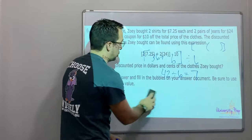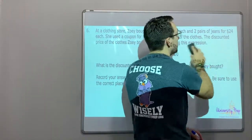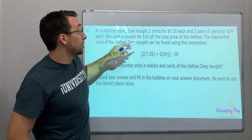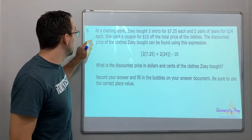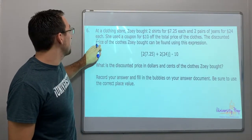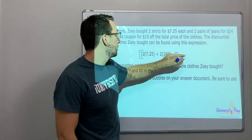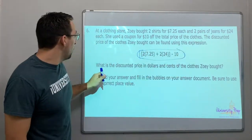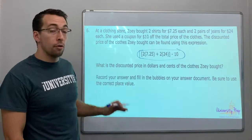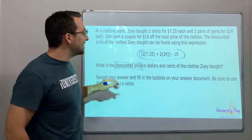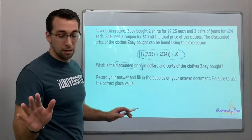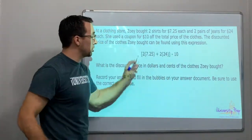At a clothing store, Zoe bought two shirts for seven twenty-five each, and two pairs of jeans for twenty-four dollars each — those are cheap jeans! She used a coupon for ten dollars off the total price. The discounted price of the clothes can be found using this expression. What is the discounted price in dollars and cents? All you have to do is solve this math expression — there's a double grouping here.